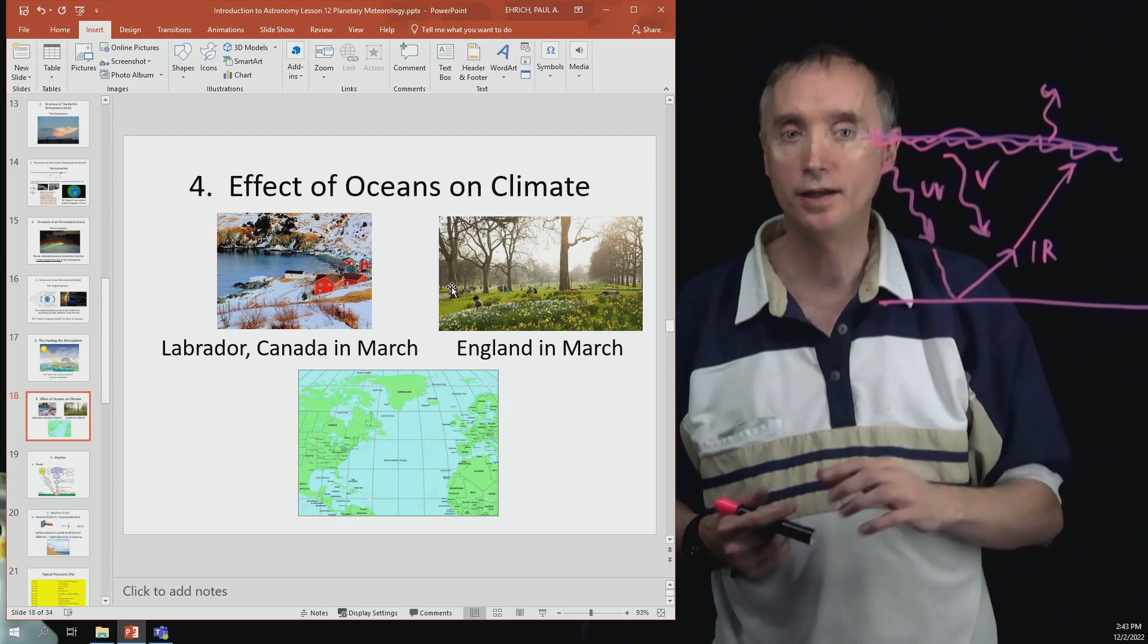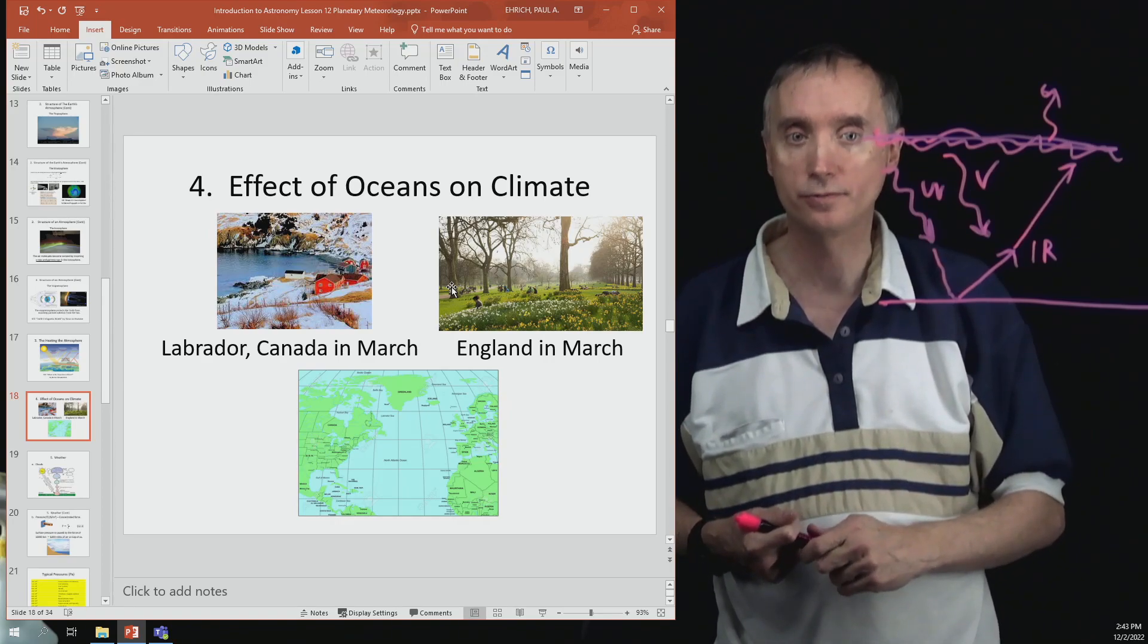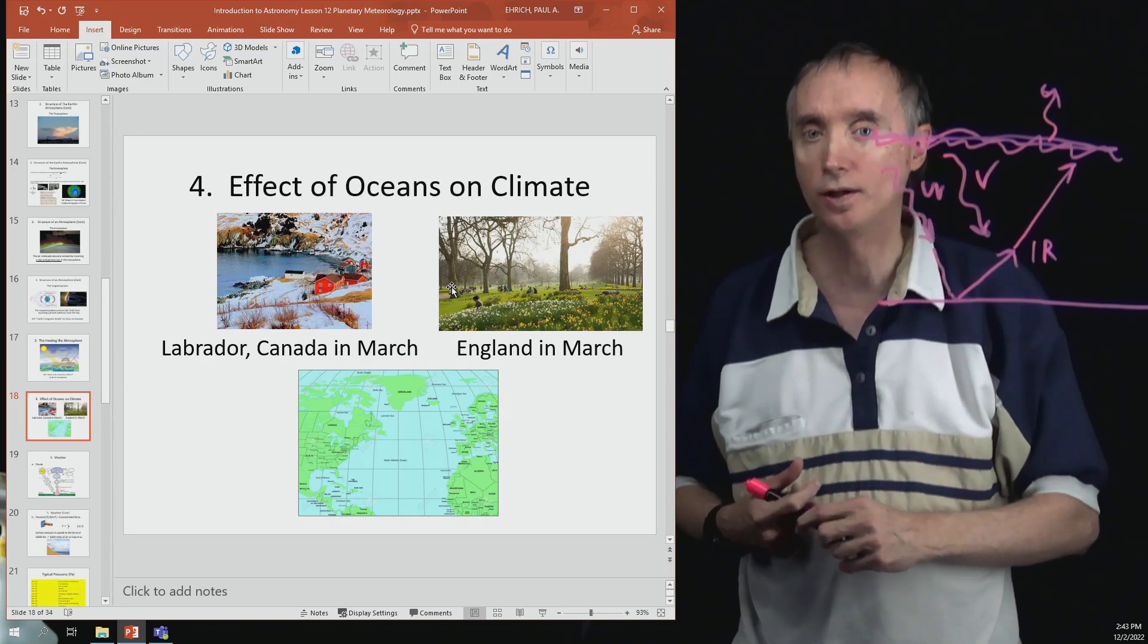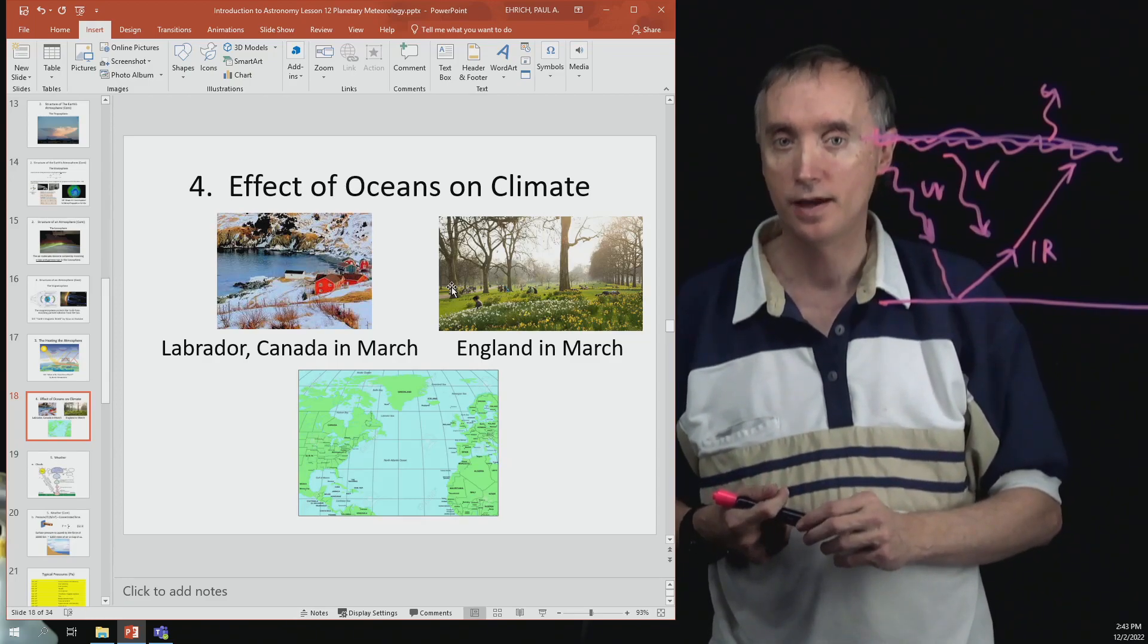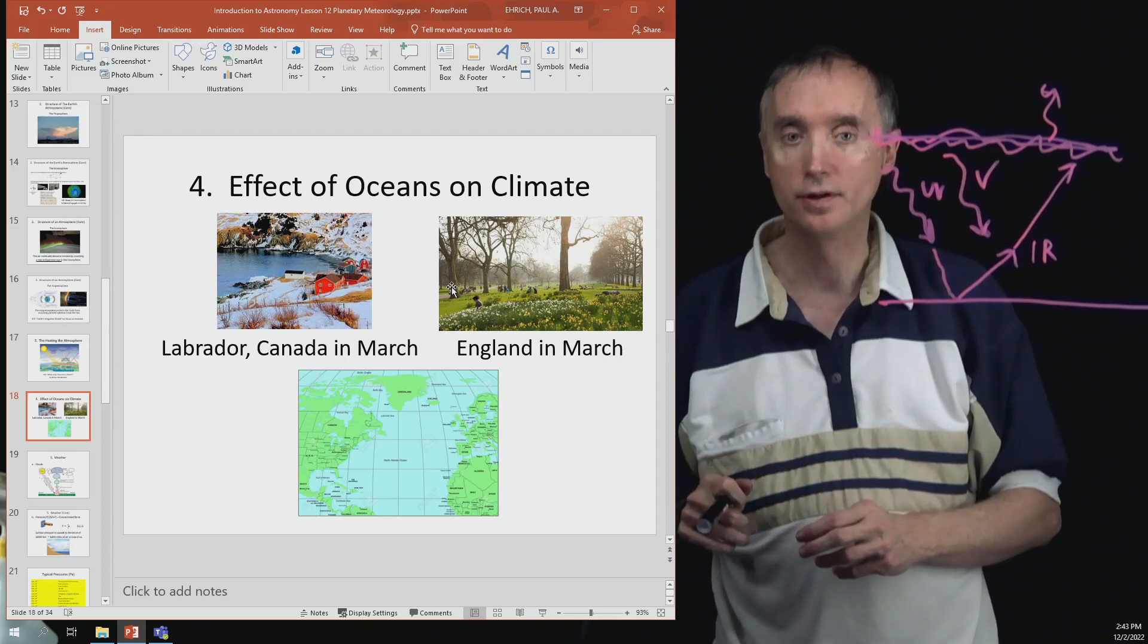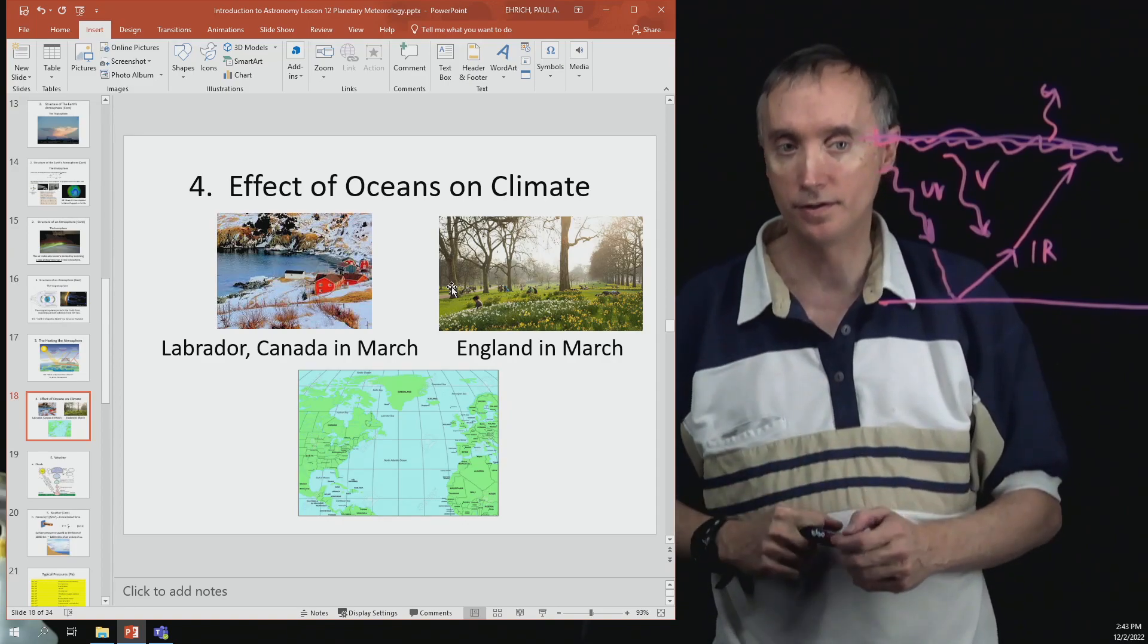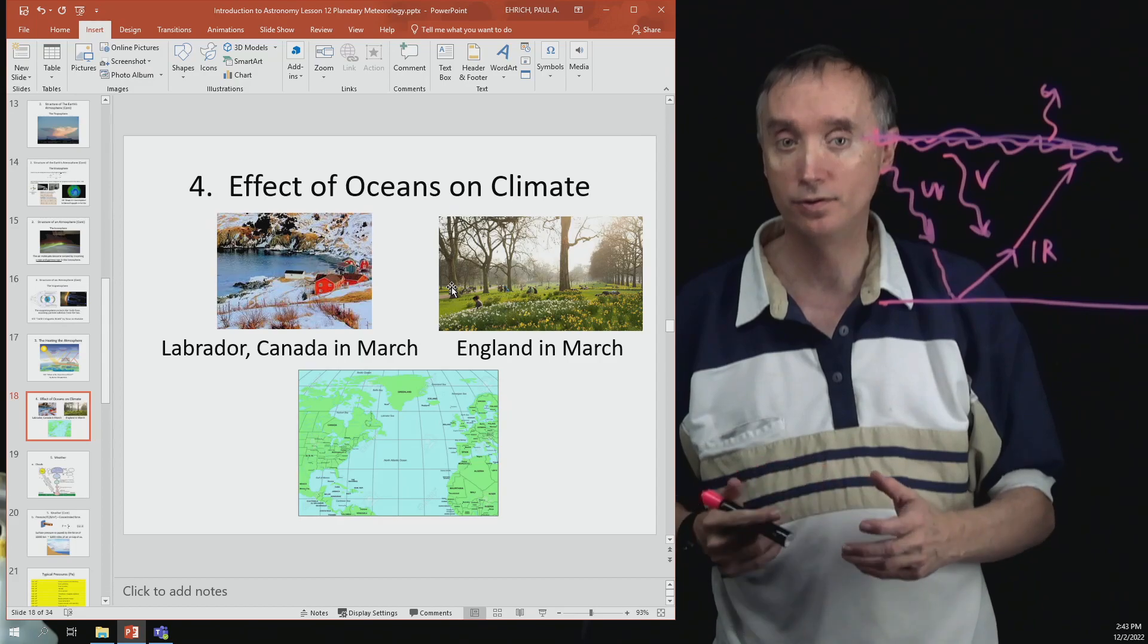But look at what England looks like in March and then look at what Labrador, Canada looks like in March. You notice that Labrador is much cooler than what England is. So what's that got to do with it?